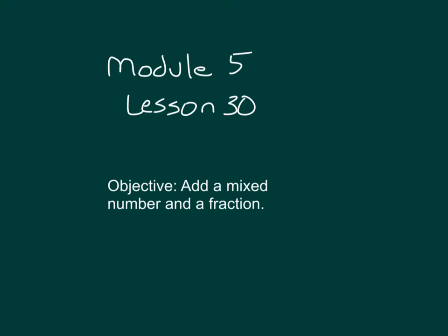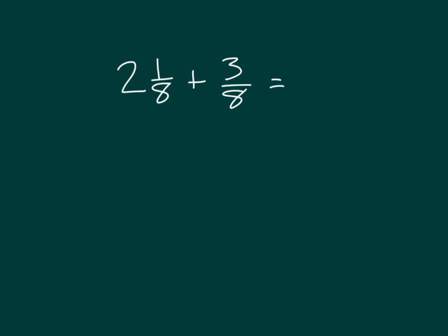The objective within this lesson is to add a mixed number and a fraction. Here we have the problem 2 and 1 eighths plus 3 eighths. Let's go ahead and say this expression within unit form. This would be 2 ones with 1 eighth plus 3 eighths.